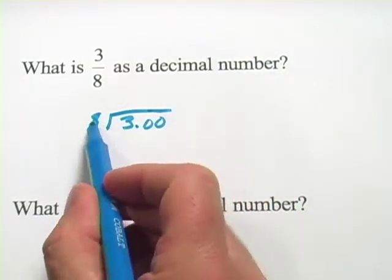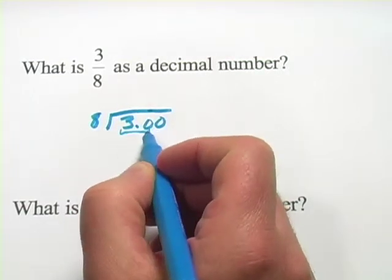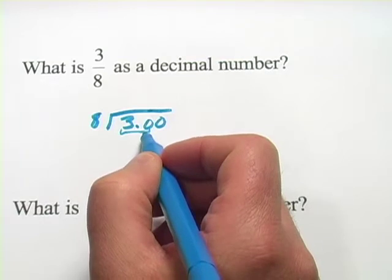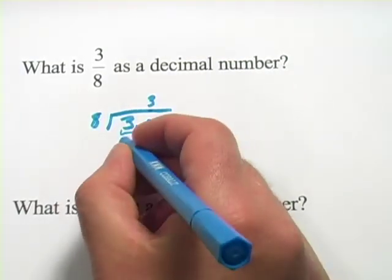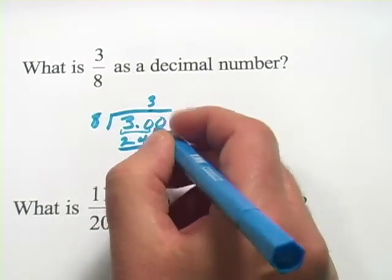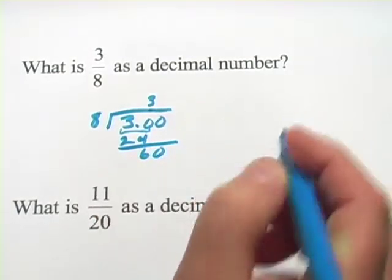Now how many 8's go into 3? Well, no 8's will fit in 3, so let's consider these 2 digits. How many 8's would go in 30? Well, 4 times 8 is 32, so I'd better go with 3. So 3 times 8 is 24, and I'll subtract here and I get 6 and I'll bring that 0 down.